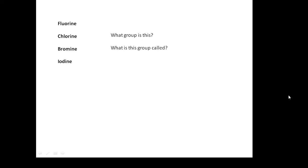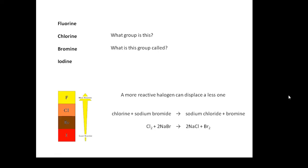Fluorine, chlorine, bromine, iodine - what group is that? What is this group called? Hopefully you recognise this is Group 7 and it is the halogens. They can do a bit of displacing as well. A more reactive halogen can displace a less reactive one. For example, chlorine plus sodium bromide will give you sodium chloride plus bromine. The chlorine is more reactive than the bromine and it can displace it. So halogens can be involved in displacement reactions as well. Notice, however, the difference is that reactivity goes upwards with the halogens - fluorine is the most reactive.